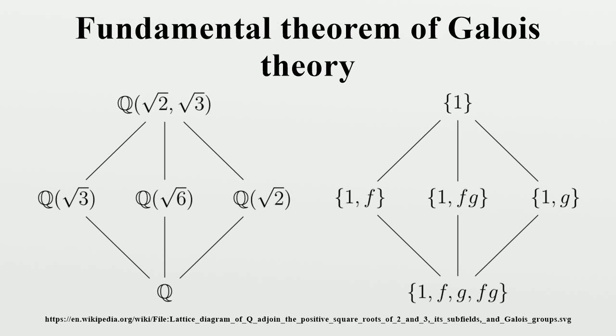The theorem classifies the intermediate fields of E/F in terms of group theory. This translation between intermediate fields and subgroups is key to showing that the general quintic equation is not solvable by radicals. One first determines the Galois groups of radical extensions where α is an mth root of some element of F, and then uses the fundamental theorem to show that solvable extensions correspond to solvable groups.